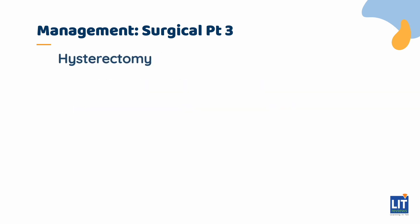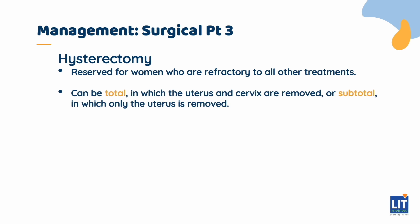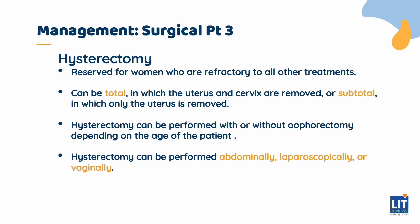Hysterectomy is a definitive surgery for AUB and should be reserved for women who are refractory to all other treatments. It can be total, in which the uterus and cervix are removed, or subtotal, in which only the uterus is removed. Hysterectomy can be performed with or without oophorectomy depending on age, and can be performed abdominally, laparoscopically, or vaginally. A benefit includes eliminating future risks of uterine cancer; however, there are risks of perioperative complications and a potentially prolonged recovery.